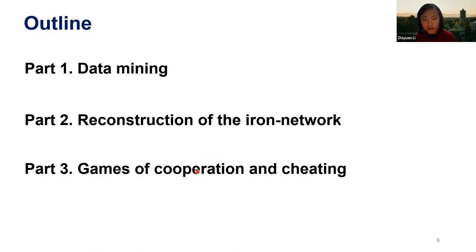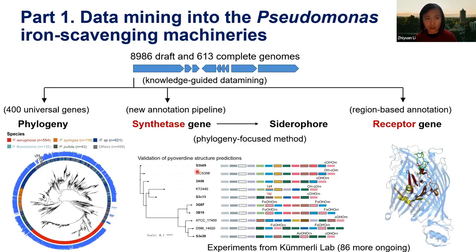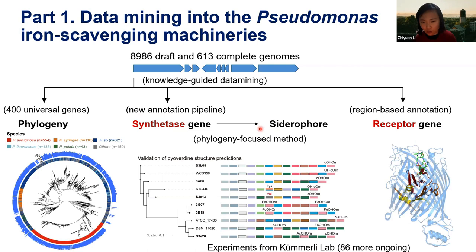As a first step, we need to annotate these hugely diverse microbe genomes to find where the synthetase genes are that make the siderophore pyoverdine, and where the receptor genes are that encode the receptors which intake them.